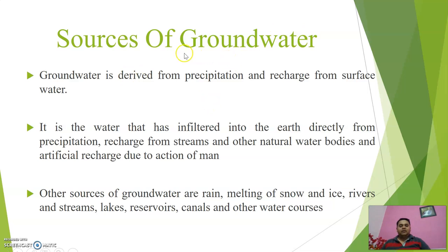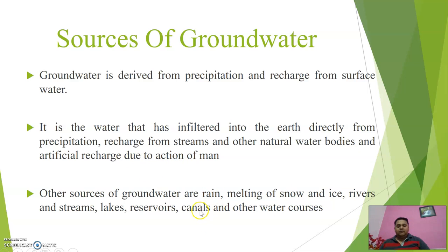We have various sources of groundwater. Groundwater is derived from precipitation and recharge from surface water. Two main sources are: first, precipitation meaning rainfall; and second, recharge from various surface water bodies including streams, natural water bodies, and artificial recharge due to human action. Other sources include melting of snow and ice, rivers and streams, and artificial canals.